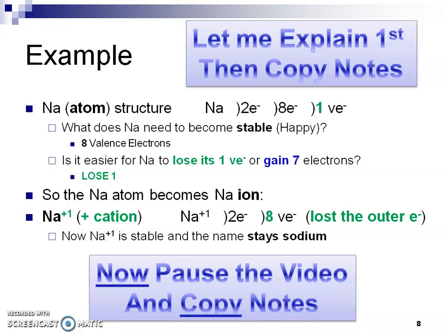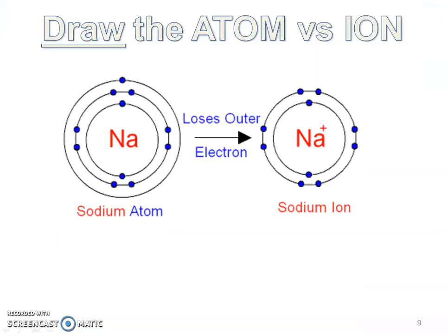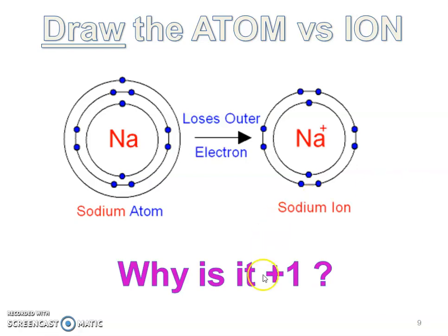Hopefully you paused and copied the notes. In your notes you're also drawing the atom versus the ion. Notice that the sodium atom has three energy levels and when it loses that last valence electron it only has two energy levels — take note of that difference. The sodium atom is different from the sodium ion. Cations can be plus one, plus two, or plus three — different charges — but for sodium it's always going to be plus one.